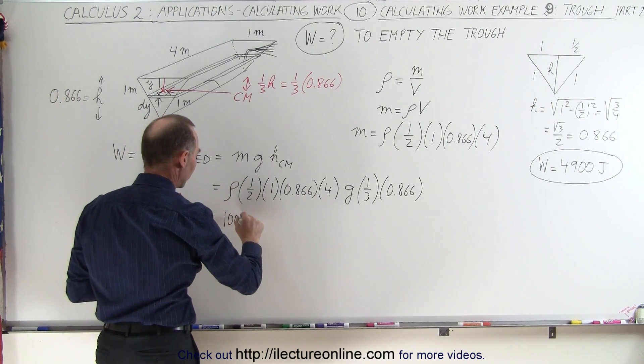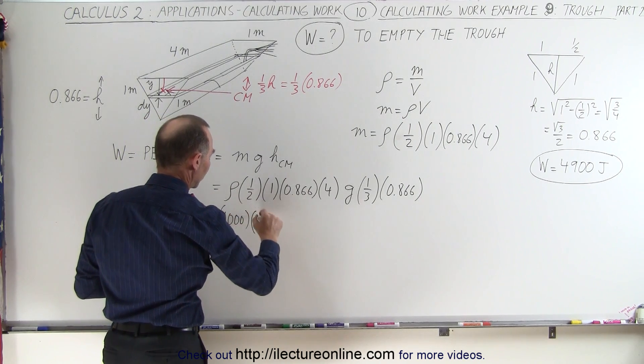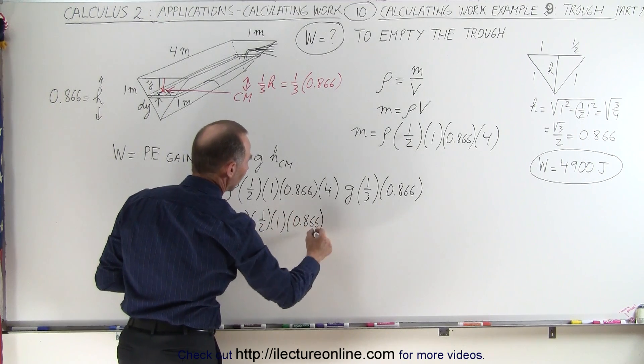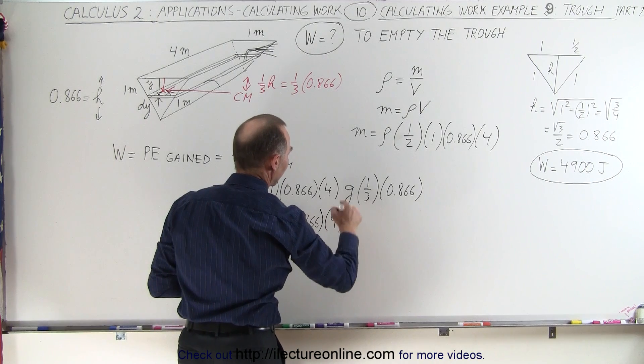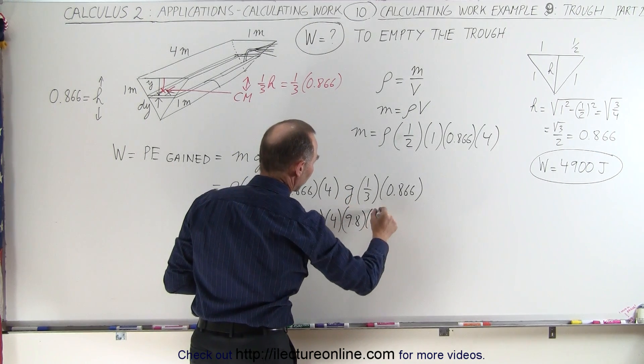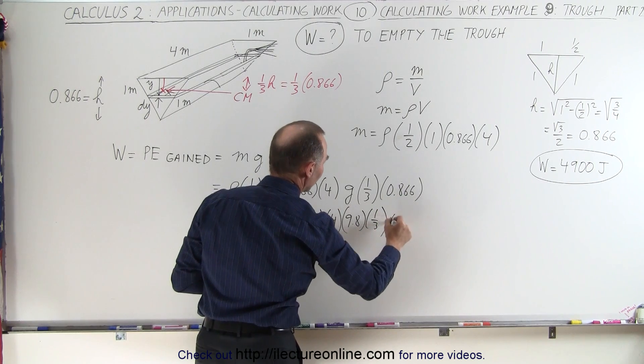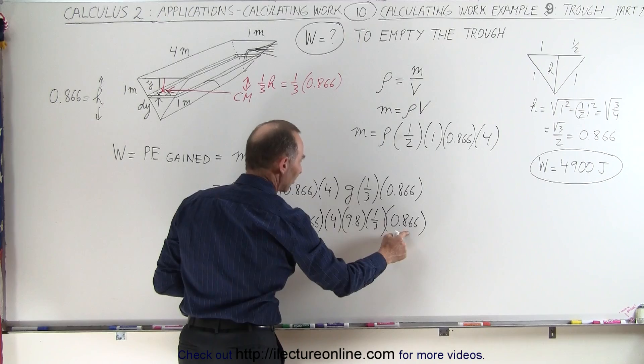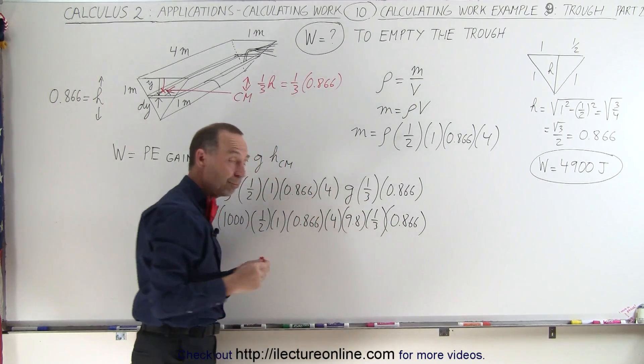Remembering that the density is 1,000 kilograms per cubic meter, so we'll write in 1,000, times one-half, times one, times 0.866, times 4, times g, which is 9.8, times one-third, and times 0.866. And of course, we'll remember that 0.866 times 0.866 is actually 0.75.